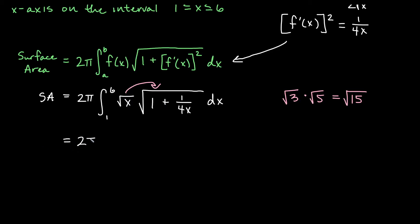So we will get 2π integral from 1 to 6 of combining these roots and distributing the x. x times one gives me x here, and then x times the one over four x, the x's reduce and I get one fourth there, dx.